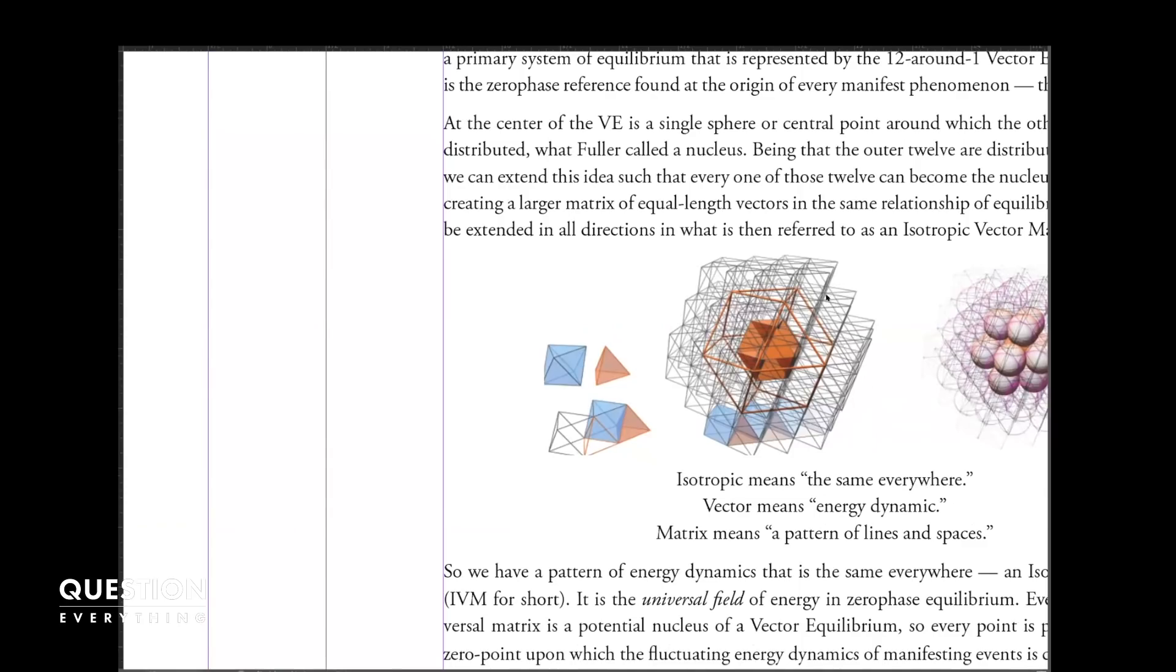The geometry of the vacuum is considered to be what's called the isotropic vector matrix. You can see the orange lines here, as well as the solid looking object in the middle, is what's called the vector equilibrium, where all of the vectors on the outside are of equal length, and the vectors going towards the center are of equal length. That's what makes it what Buckminster Fuller called the vector equilibrium. It's the only geometry where the vectors are the same length all around the outside as well as to the center.